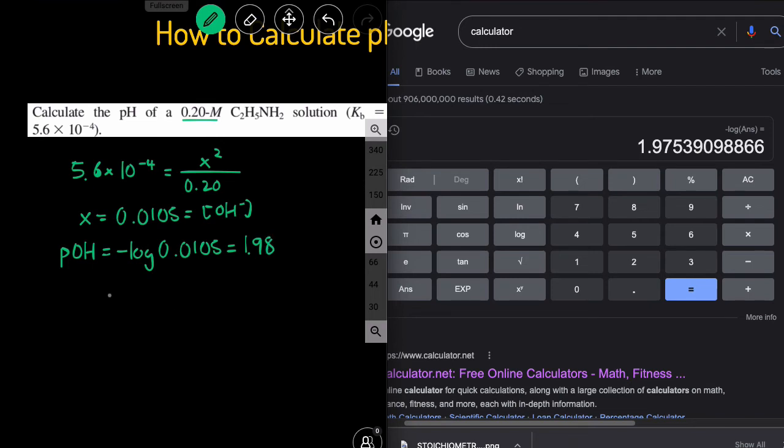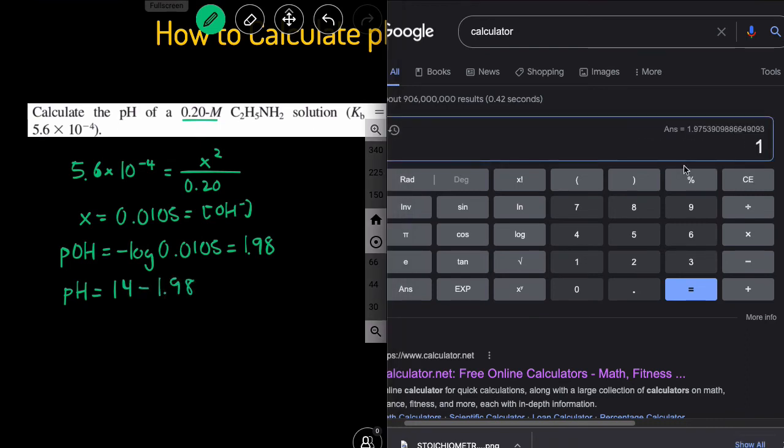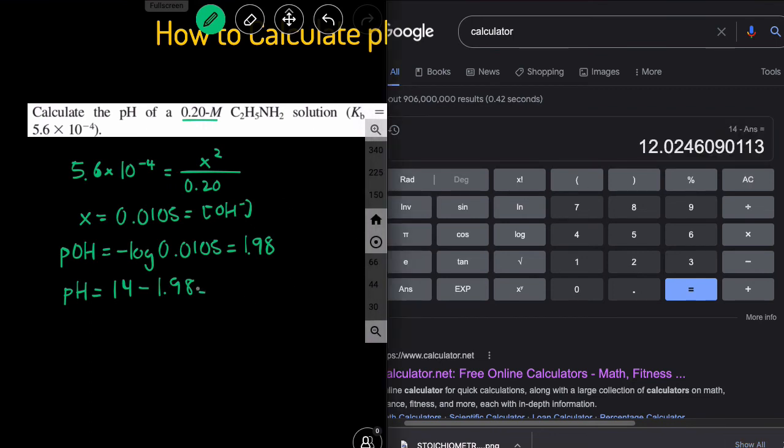And then lastly, once we have pOH, we can get pH by just subtracting the pOH from 14. So 14 minus our answer, and then we do 14 minus answer, and that gives us a pH of 12.02.